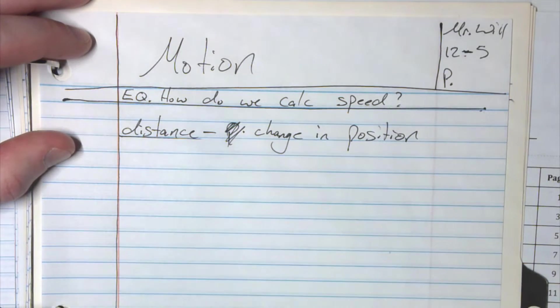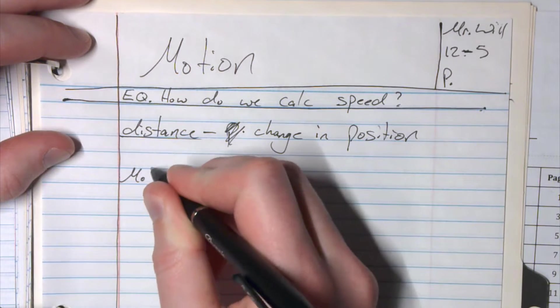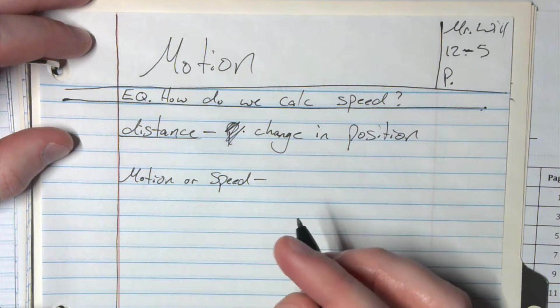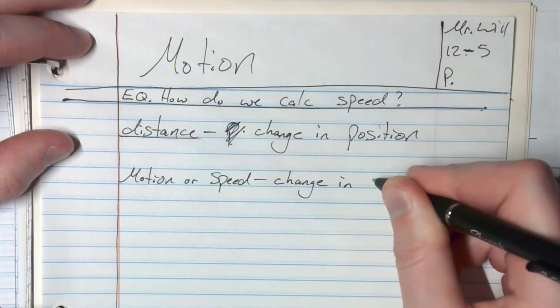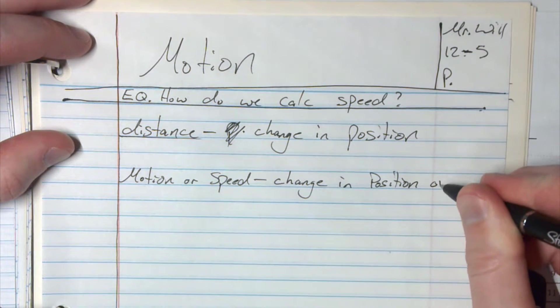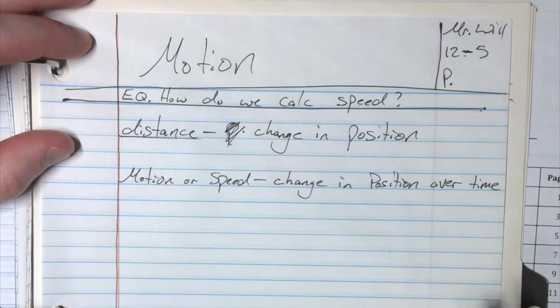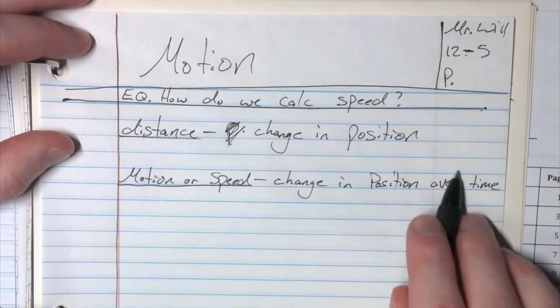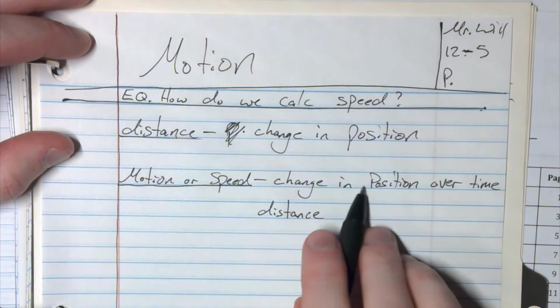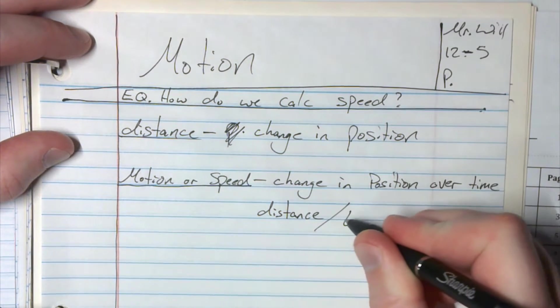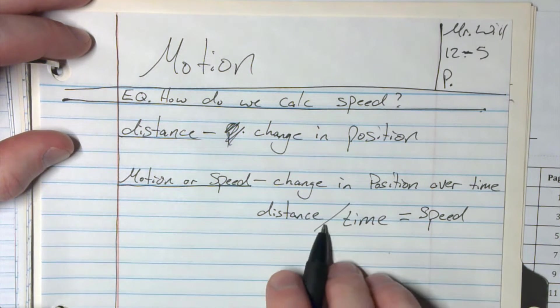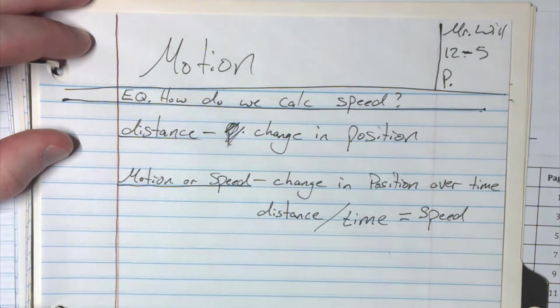The next one is motion or speed. They're kind of interchangeable. So motion or speed - this is the change in position, which is what we just had, so that's our distance, and it's over time. So how long did it take to move that distance? This word 'over' means I'm actually dividing. And so we can write this: distance, which is change in position, and then I'm dividing by time. So that's my equation for speed. Distance divided by time is speed.